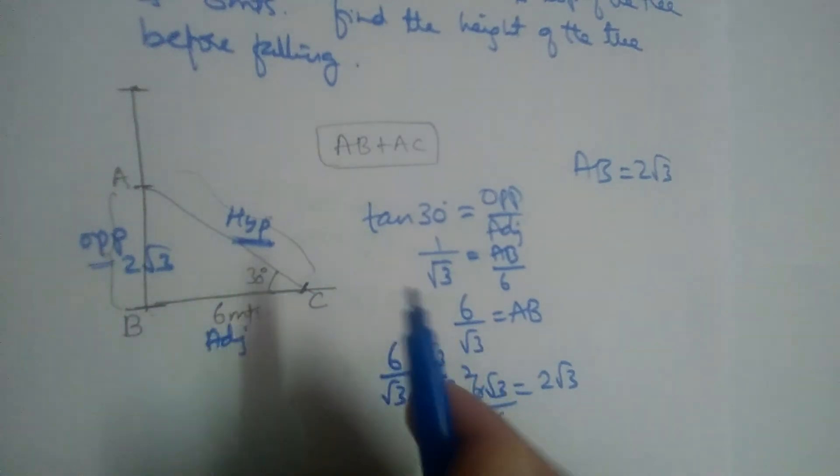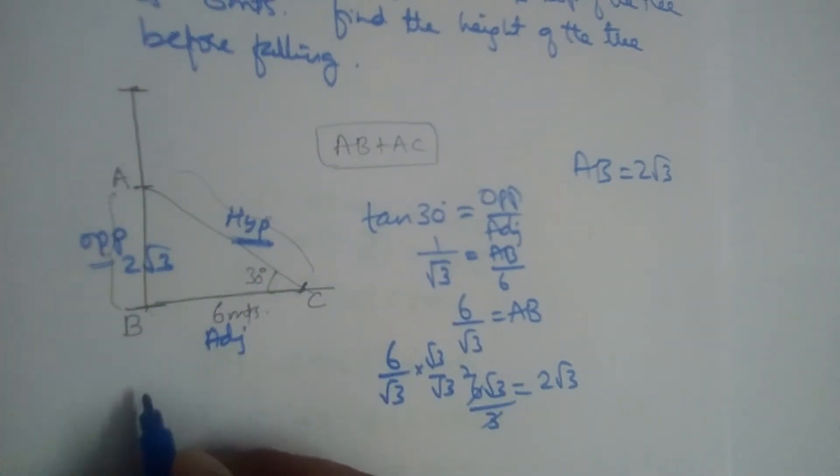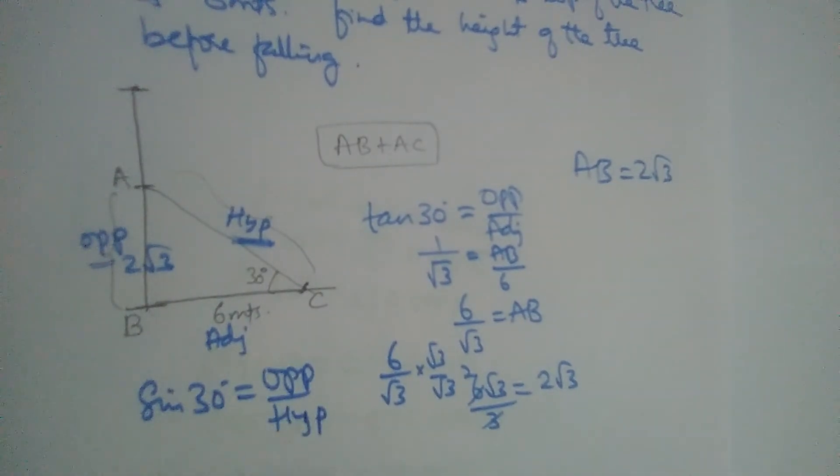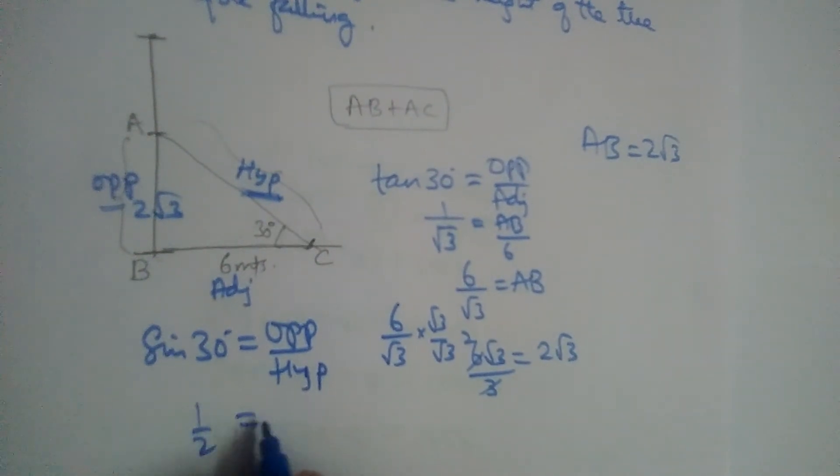We can use sin also. So let us use sin. Sin 30 degrees is equal to opposite by hypotenuse. So sin 30 is 1 by 2. Opposite side is 2 root 3. Hypotenuse is not known, it is AC.